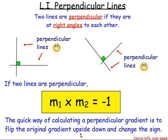For example, say you had a line with a gradient of three quarters. To work out the gradient of the perpendicular line, you take three quarters, turn it upside down to get four over three, and change the sign. Three quarters is positive, so it becomes negative four over three.